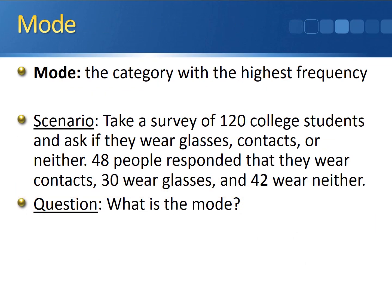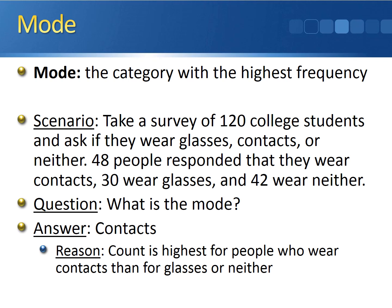The final numerical measure to describe categorical data is the mode, which is simply the category with the highest frequency. Looking at our scenario — 48 contacts, 30 glasses, 42 neither — the mode is contacts because it has the highest count. Note that the mode is not the frequency itself; 48 would be incorrect. The correct answer is the actual category with the highest frequency, which is contacts.